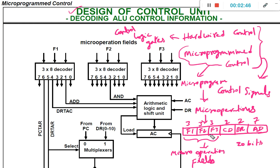Among these fields, F1, F2, F3 are very important because they represent the micro operations. To decode the functional micro operation fields and generate a specific operation, we use a 3-by-8 decoder. Using 3 bits, we can generate 8 different values — from 0 to 7: 000 represents 0, 001 represents 1, 010 represents 2, 011 represents 3, 100 represents 4, 101 represents 5, 110 represents 6, 111 represents 7.